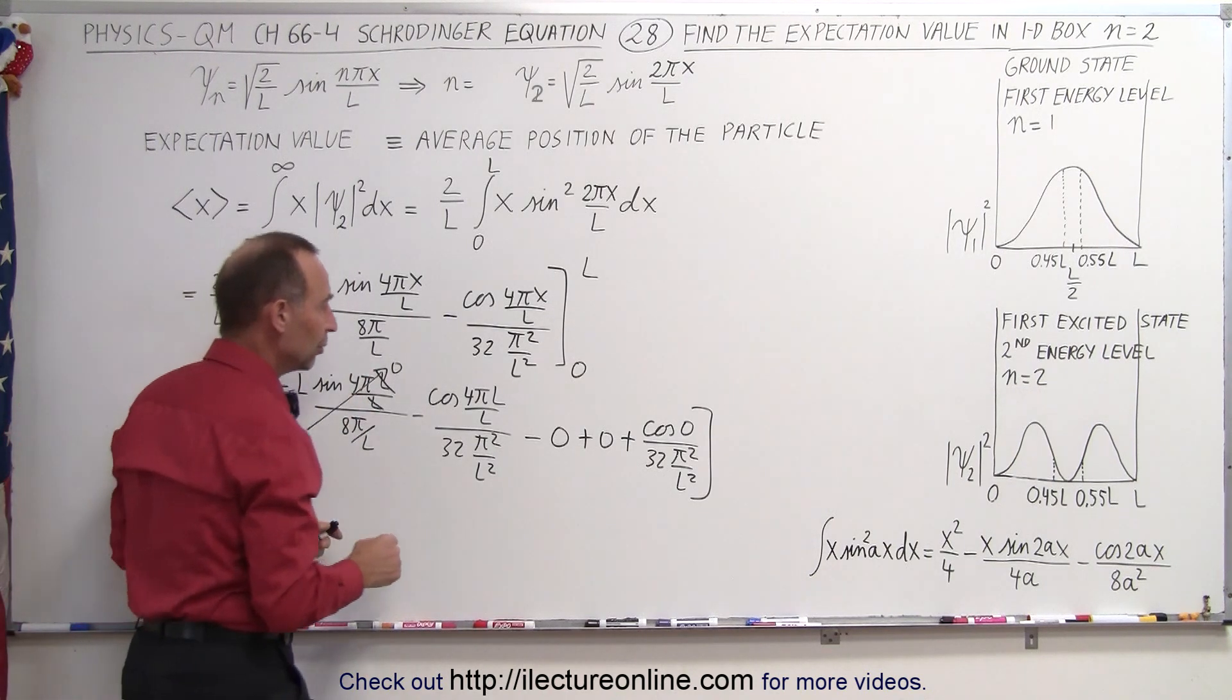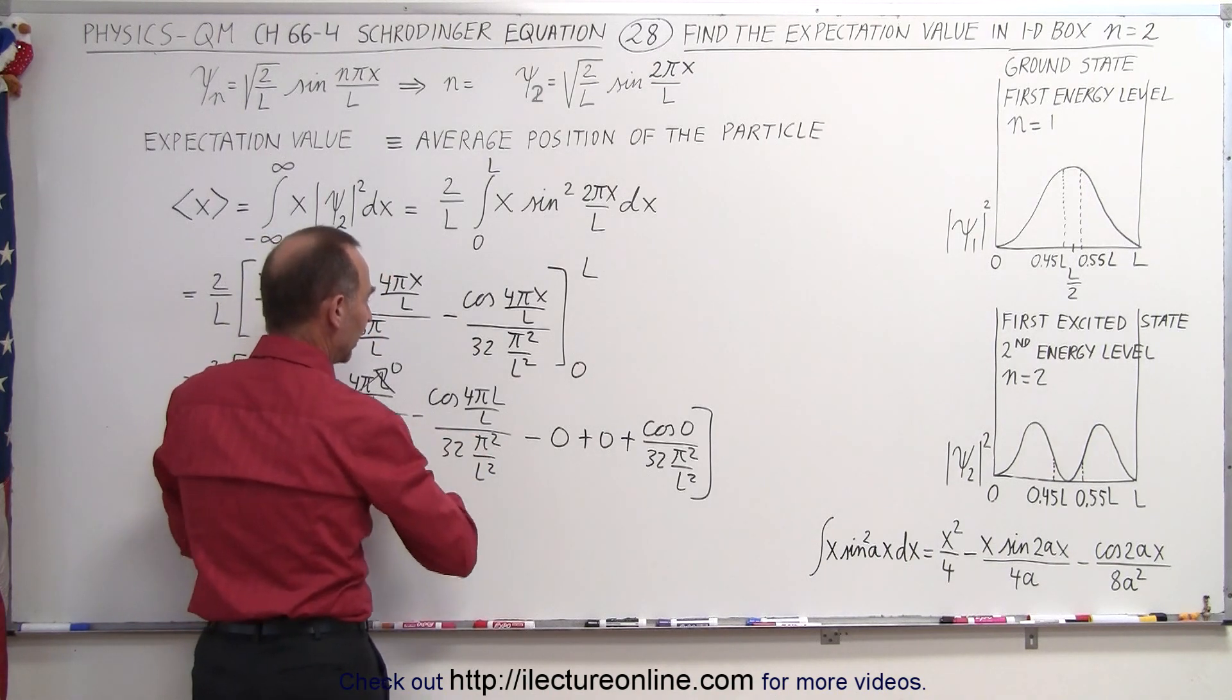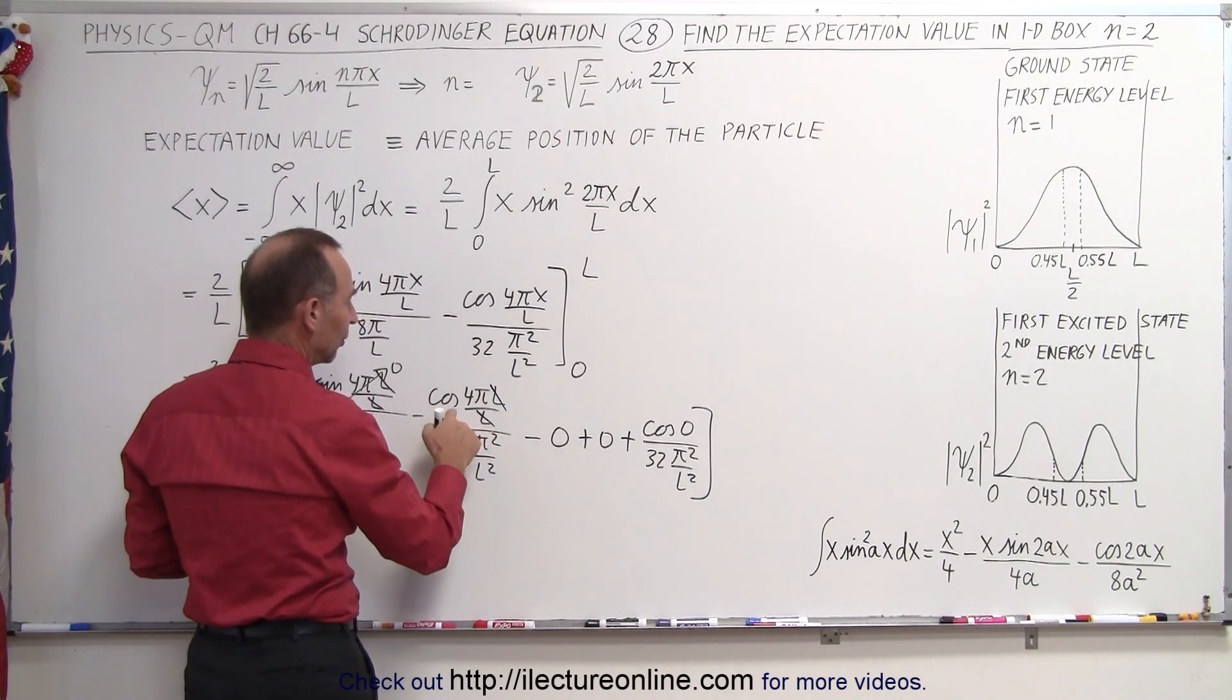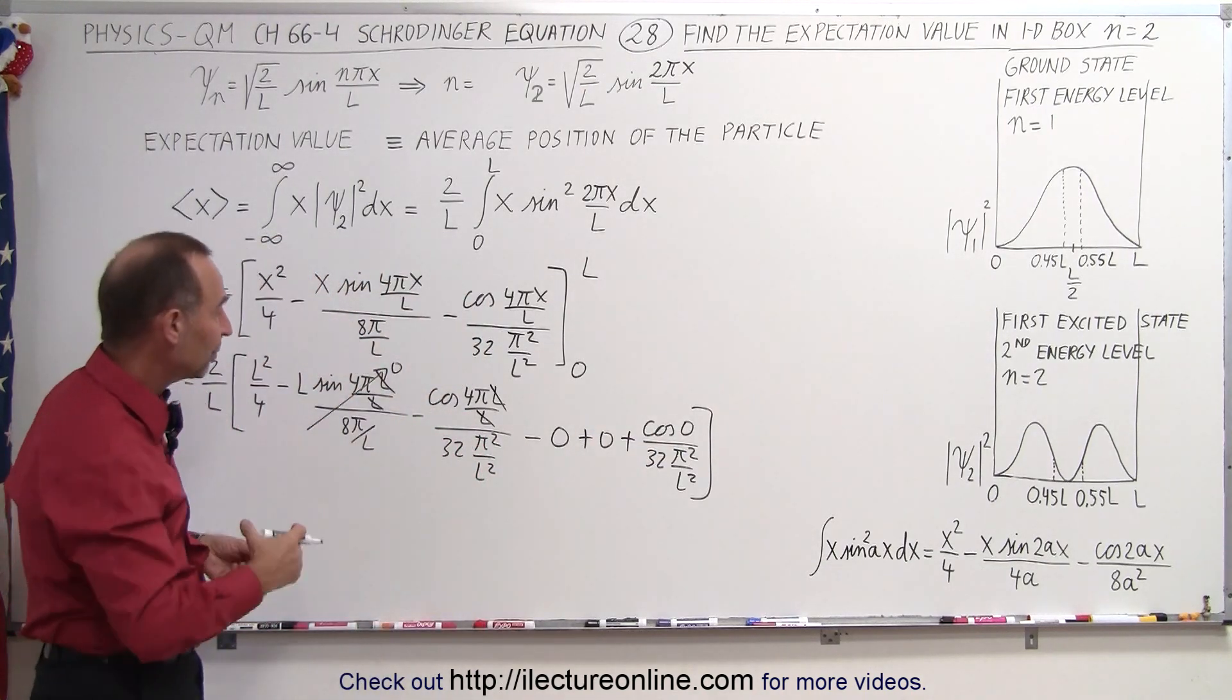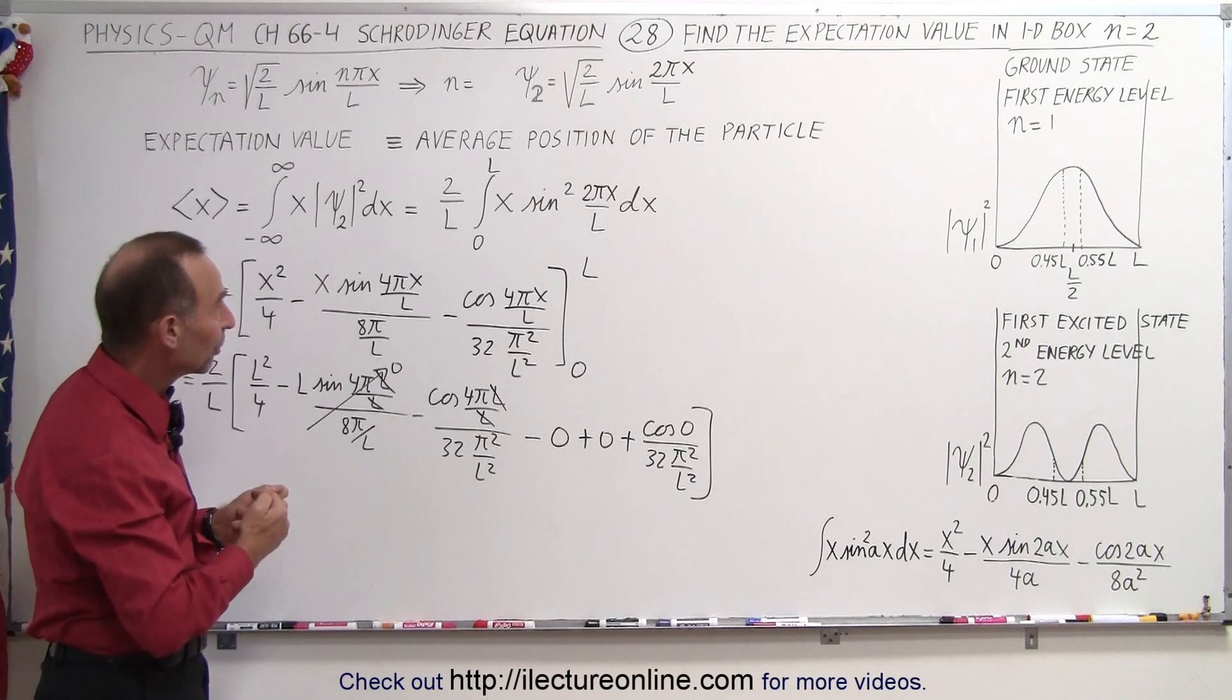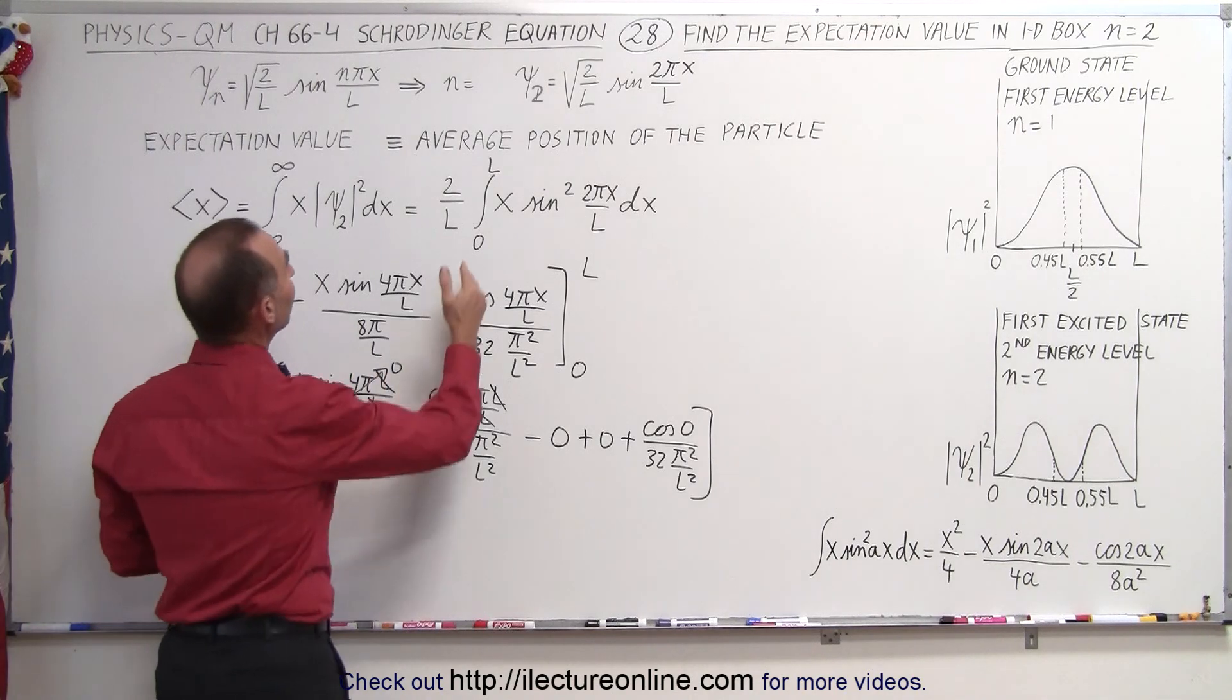And likewise, over here, notice that we have the cosine of 4 pi because the l's cancel out. And the cosine of 4 pi is the same as the cosine of 0, the cosine of 6 pi is the same, the cosine of 8 pi is the same. So again, we can see that no matter what the value for n is...